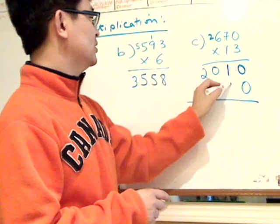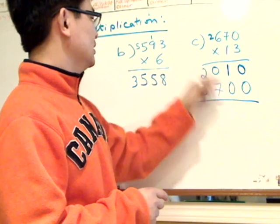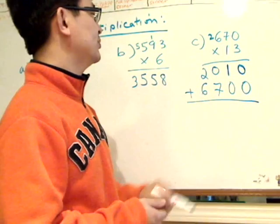Okay, so one times zero is zero, one times seven is seven, one times six is six. Then the next step, of course, is to add them together.